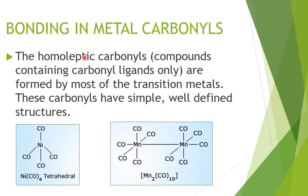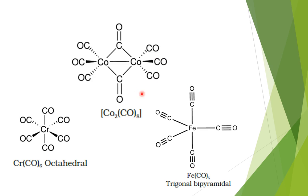Next, we have bonding in metal carbonyls. Metal carbonyls are homoleptic carbonyls where the ligands are only CO, the carbonyl group. These are formed by most of the transition metals and have simple, well-defined structures. Examples include nickel tetracarbonyl, manganese carbonyl, cobalt carbonyls, chromium carbonyls, and iron carbonyls.